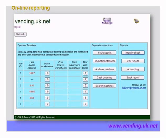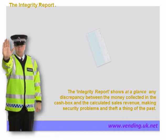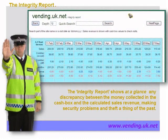Let's look at the server side — the internet screens that you see back at the office. Reports are shown on the right hand side and you can access these by clicking the buttons on the right hand side of the screen. A very powerful report is the integrity check.